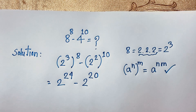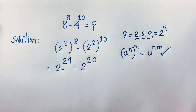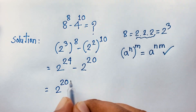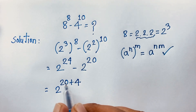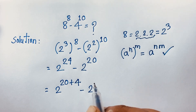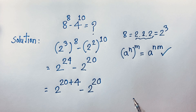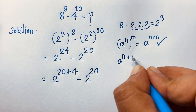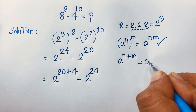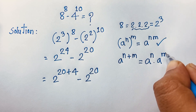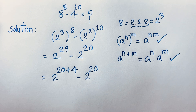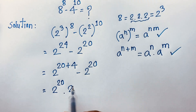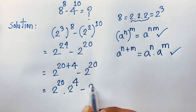Now I can rewrite the exponent: 2 to the power 24 equals 2 to the power (20 plus 4). According to the exponential law, a to the power (n plus m) equals a to the power n times a to the power m. Applying this law, the expression becomes 2 to the power 20 times 2 to the power 4, minus 2 to the power 20.